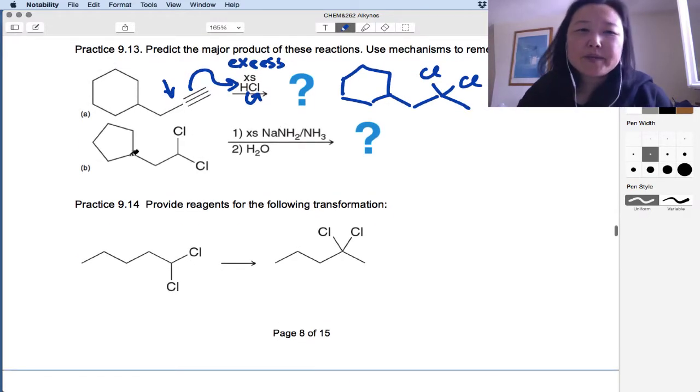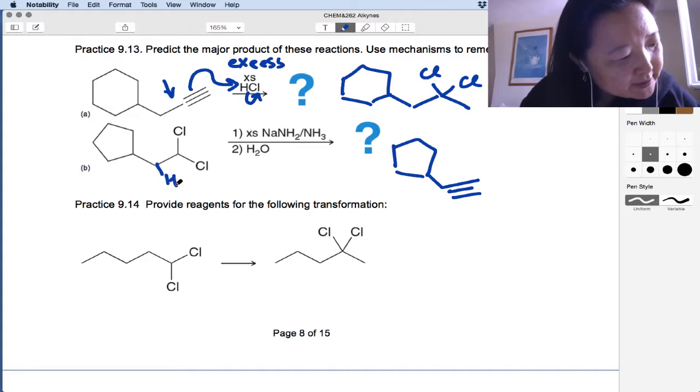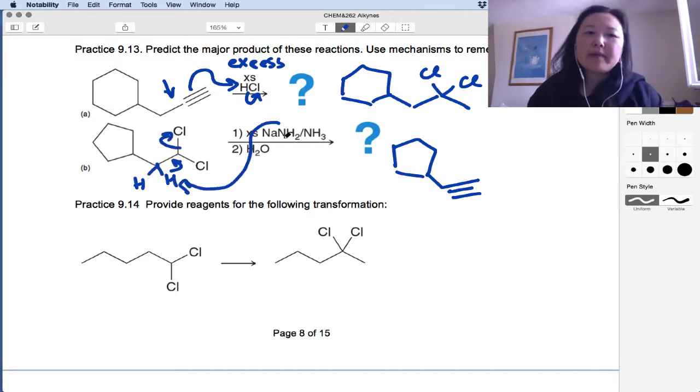All right, and then do you guys want to go ahead and pause it and try this one and see what do these reagents do? What do we end up with here? Okay, if you guys remember, this is double elimination. This is a strong base, and my beta hydrogens are over here. And I'm going to grab those with my sodium amide. And I'm going to do it again, and I'm going to form a terminal alkyne, which is going to be deprotonated, but the water workup is going to neutralize that.